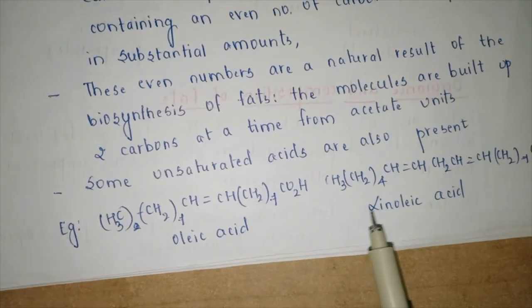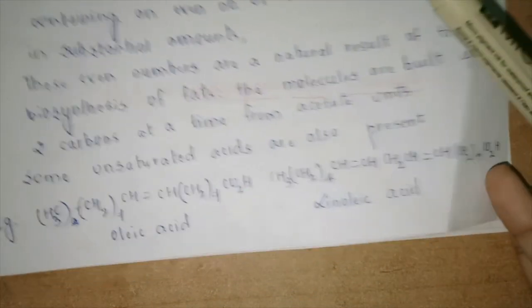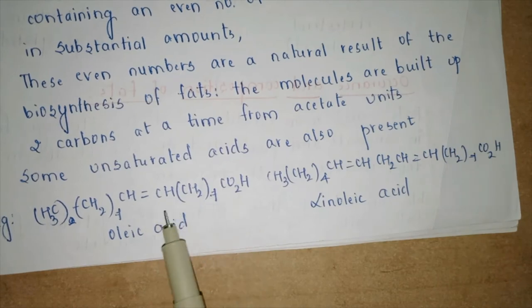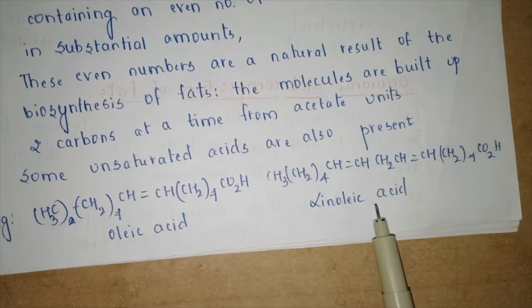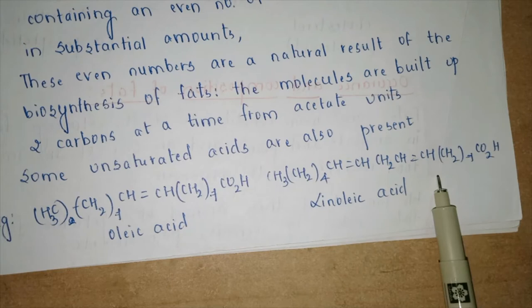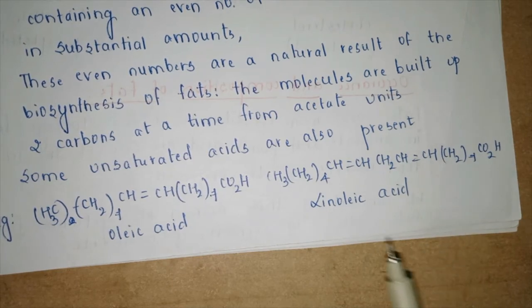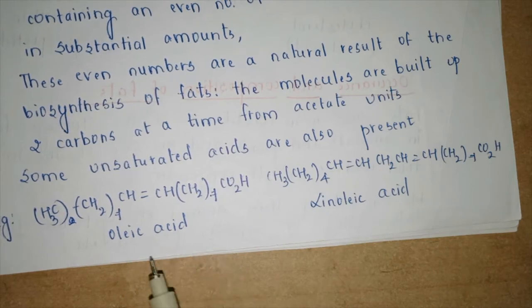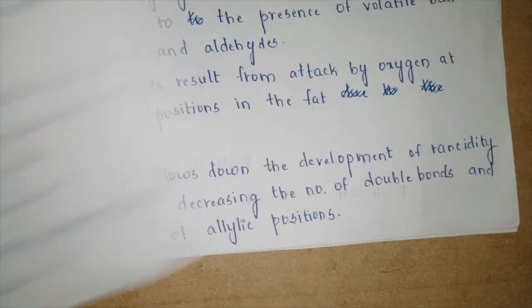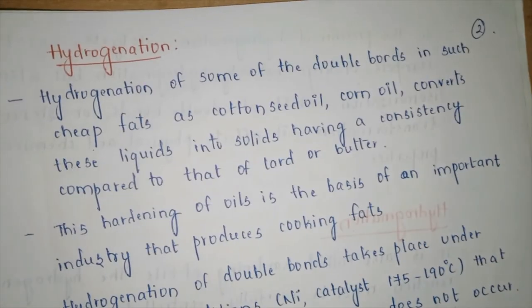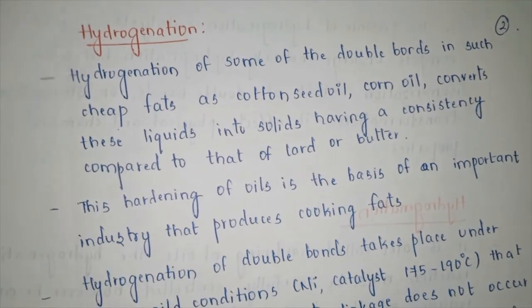Examples of fatty acids include oleic acid, which is unsaturated, and linoleic acid, also unsaturated. Generally, fatty acid systems may be either saturated or unsaturated. These two are examples of unsaturated fatty acids.